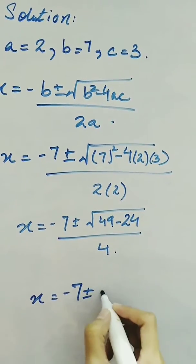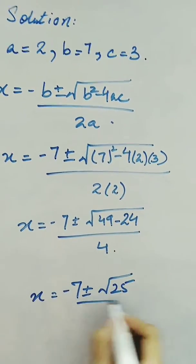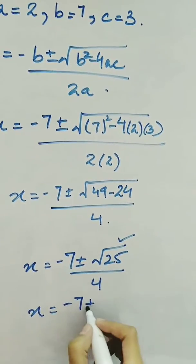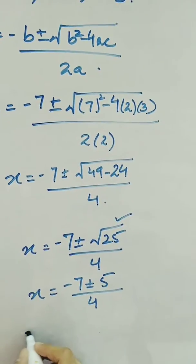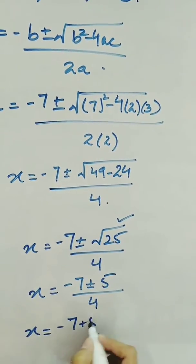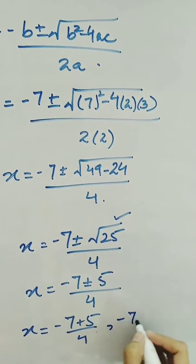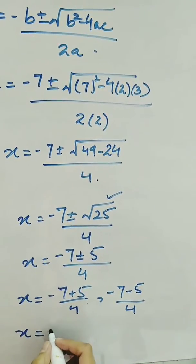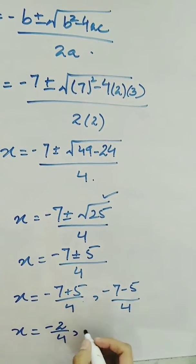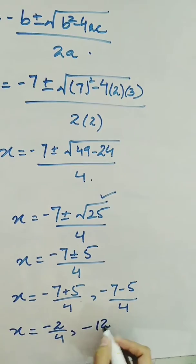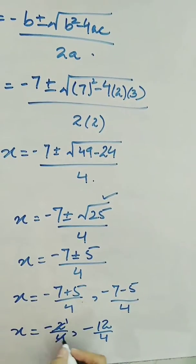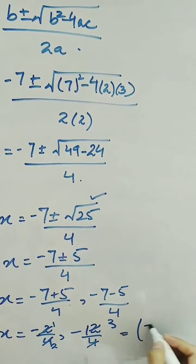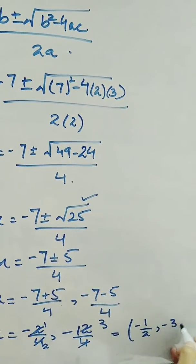We have minus 7 plus minus under root 25 over 4, and the square root of 25 is 5. So we have minus 7 plus 5 over 4 and minus 7 minus 5 over 4. This gives us the values of x as minus 2 over 4 and minus 12 over 4, which simplifies to minus 1 over 2 and minus 3.